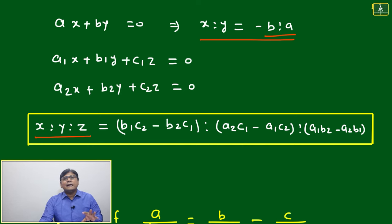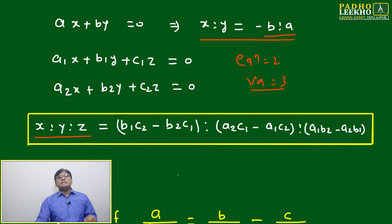We have two equations but three variables (x, y, z), so we can't get a unique solution. We will only get an idea about the ratio among x, y, and z. This is one common thing we know.